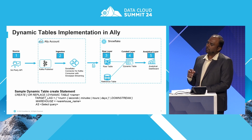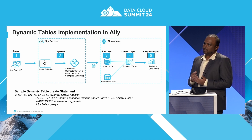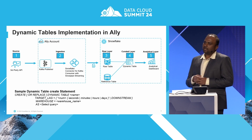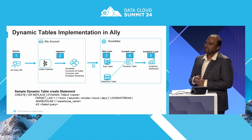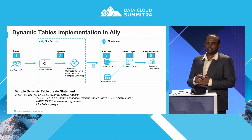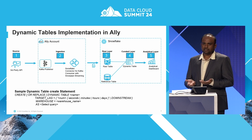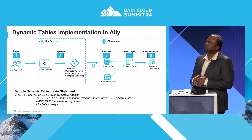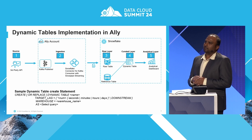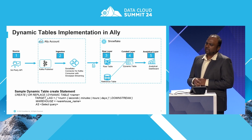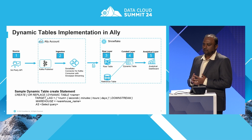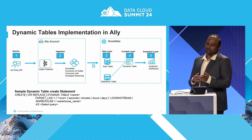We build dynamic tables on top of the raw layer. In the curated layer, we explored both dynamic tables as well as streams and tasks. The main objective is to reduce complexity. A dynamic table is a new type of table in Snowflake — you create it on top of a SELECT statement, which enables joins, aggregate functions, and all other SQL functions. It's a very simple way to create a table. You can define your own target lag — the minimum is one minute — and you can build a dynamic table on top of another dynamic table, allowing downstream dependencies.